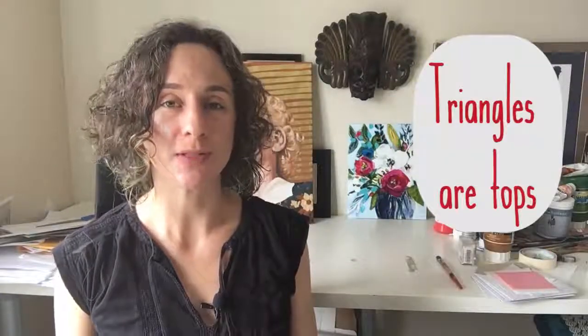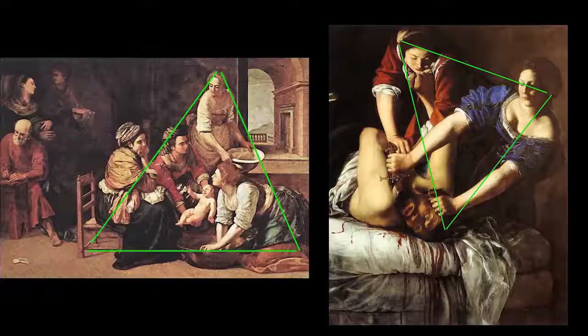Triangles — speaking of the Renaissance, you'll observe that works from that period often arrange the composition in a triangle. This was regularly used as a tool to help create compositions in their artwork. You can see this in the two works I share here by Artemisia Gentileschi: The Birth of Saint John the Baptist and Judith Beheading Holofernes.